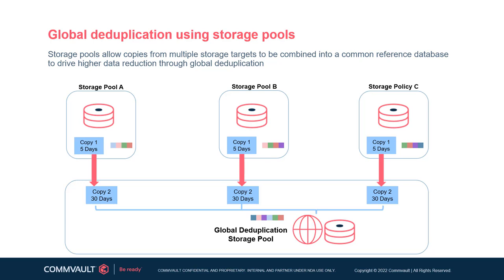Commvault software also provides a global deduplication capability wherein copies of data from multiple storage targets may be combined and referenced through a centralized deduplication database, achieved by creating what is known as storage pools. This allows customers to collapse wider groups of common data into a global pool to maximize deduplication efficiency. Increased efficiency is achieved by having a larger common pool of blocks to reference against, and it provides flexibility to design fan-in scenarios to maximize storage target utilization. A global deduplication storage pool can span secondary sets of DashCopies in a single data center repository.